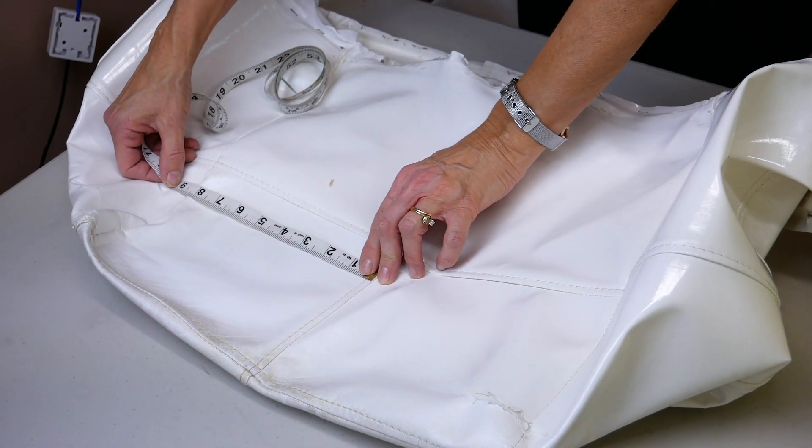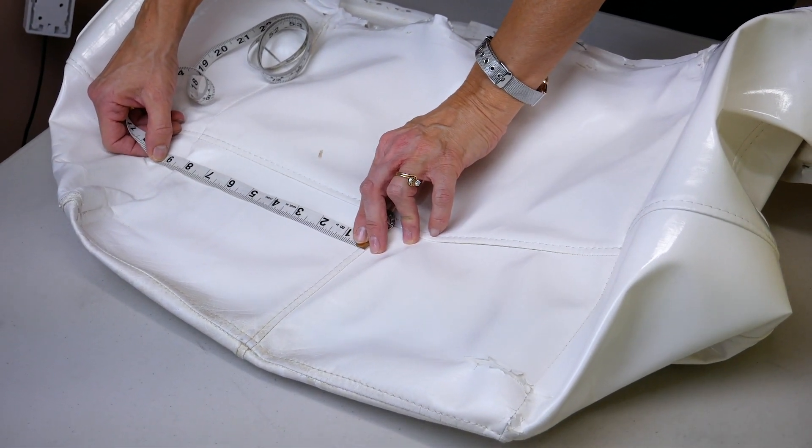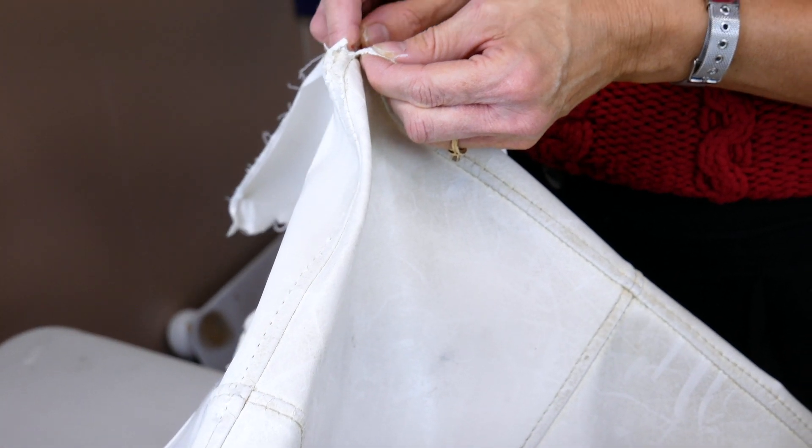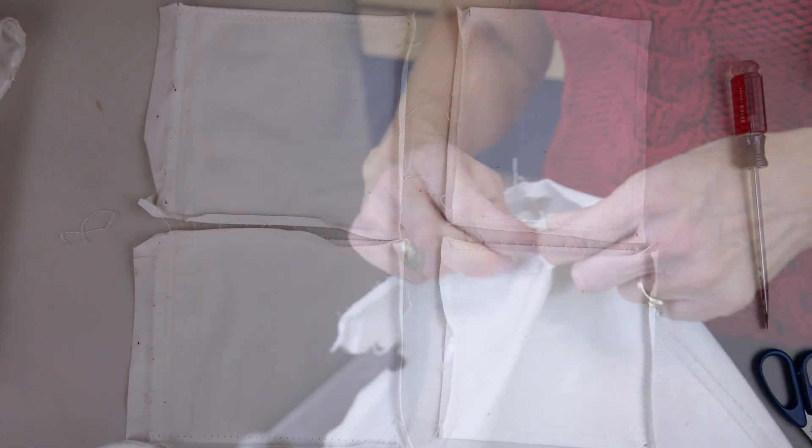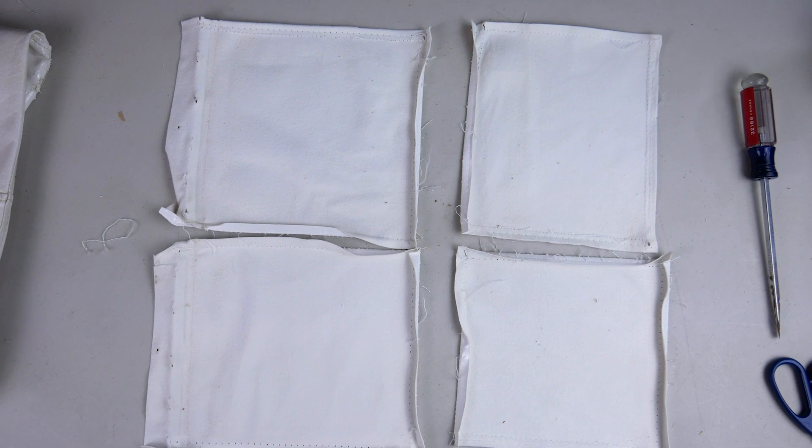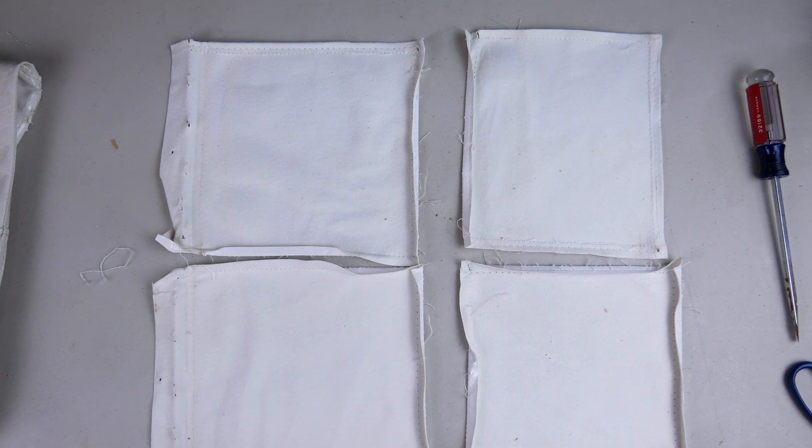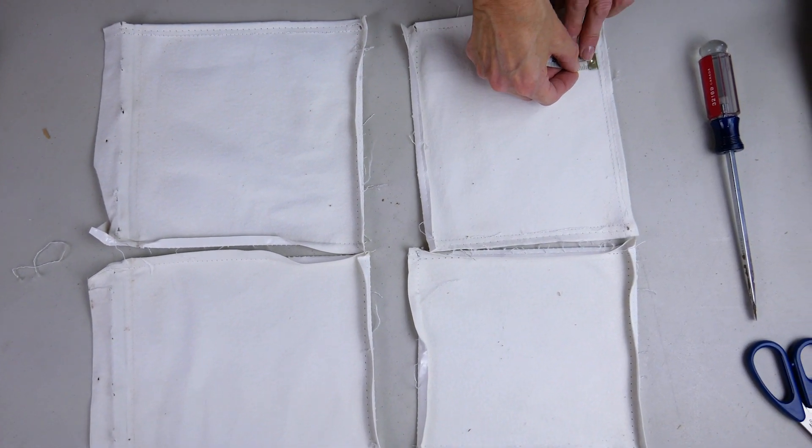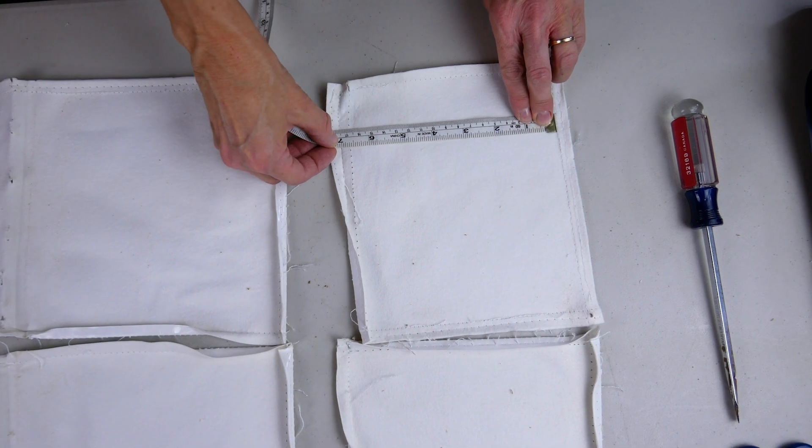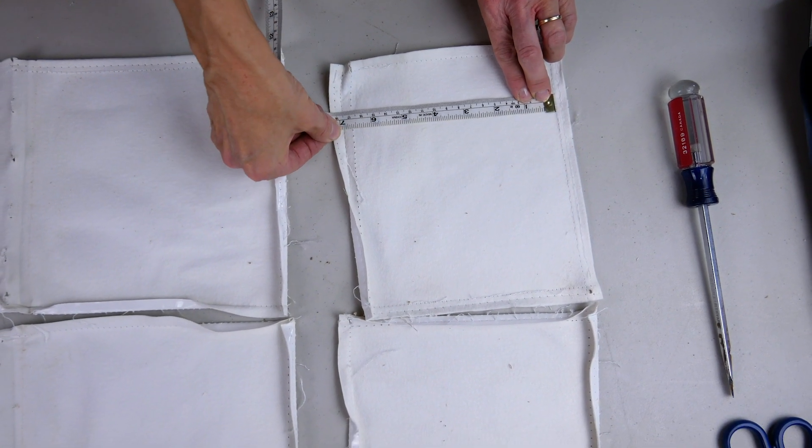You can use the old cover pieces to make a pattern for your new cover by tearing apart the seams and laying out all the individual pieces. Because this particular ottoman has just square pieces, I've decided to also measure the squares length and width and cut out one pattern for the pieces that apply.